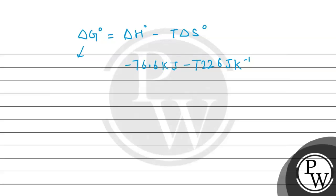Now we should have the value of ΔG° negative for spontaneity. So first of all, let's convert kilojoules to joules.